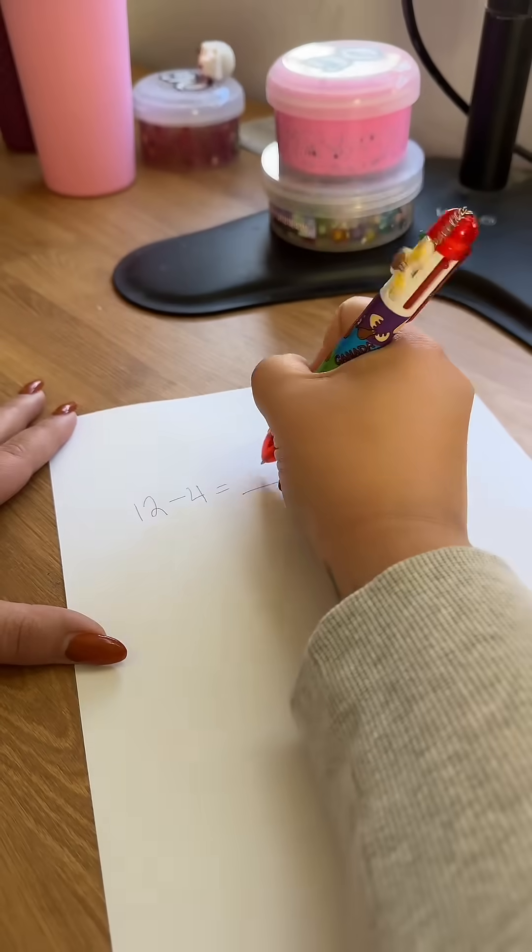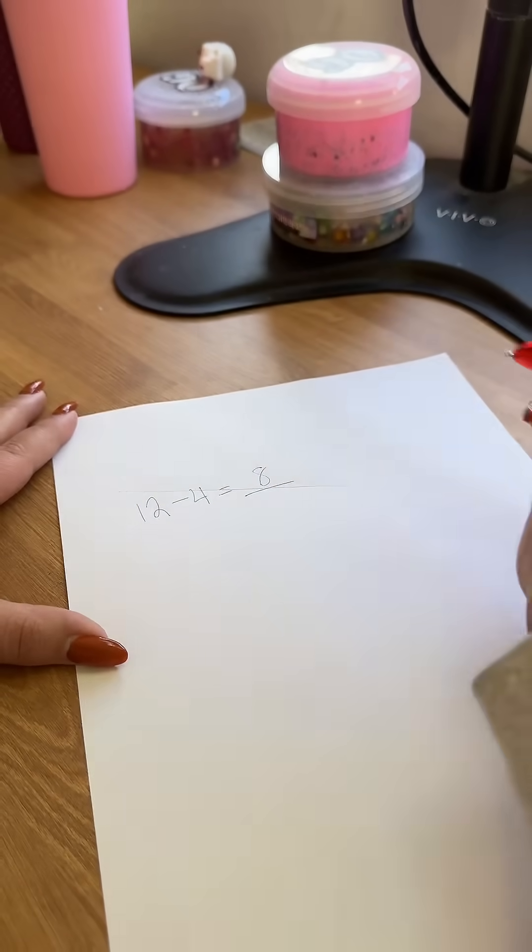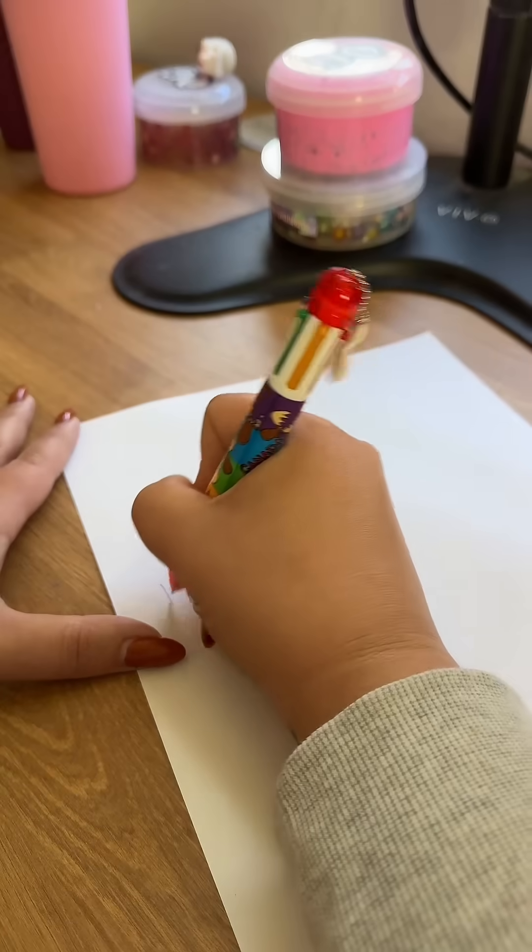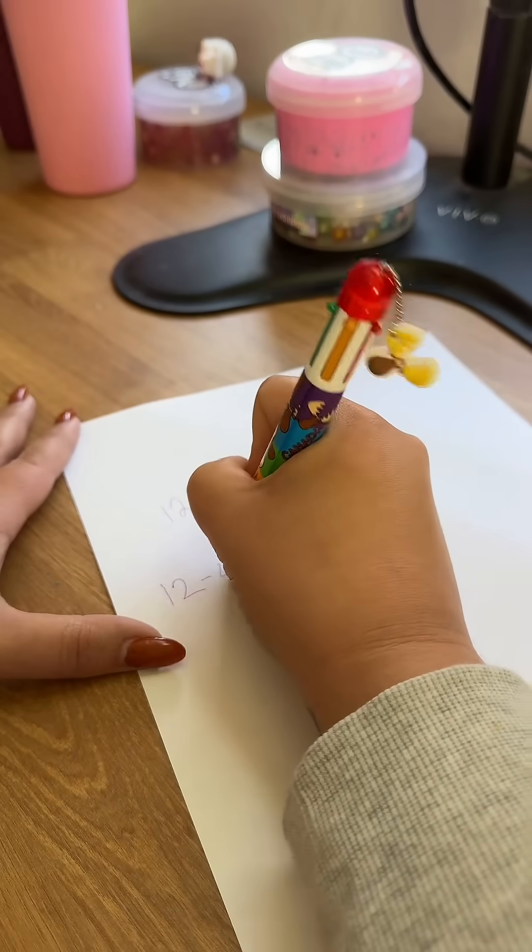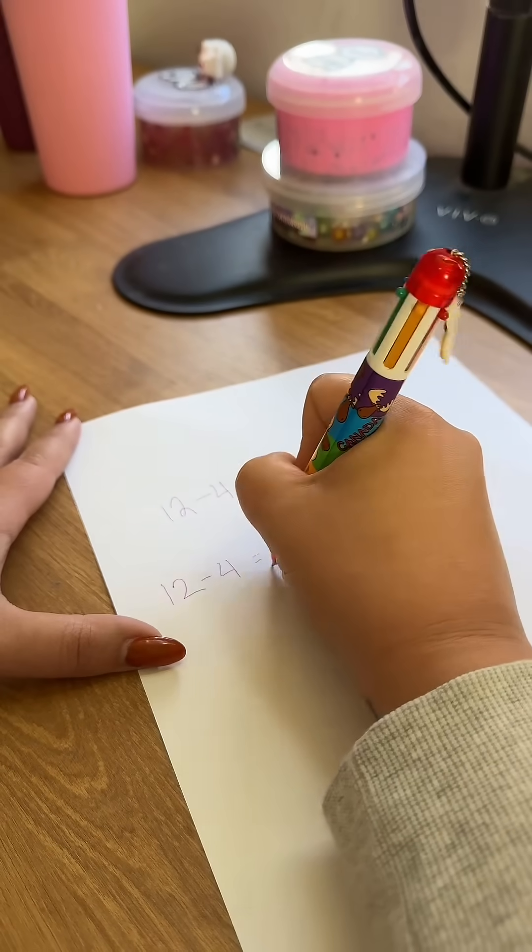Okay, so we have 12 minus 4 equals 8, right? Wrong. My daughter's school is teaching them to do 12 minus 4 equals blank.